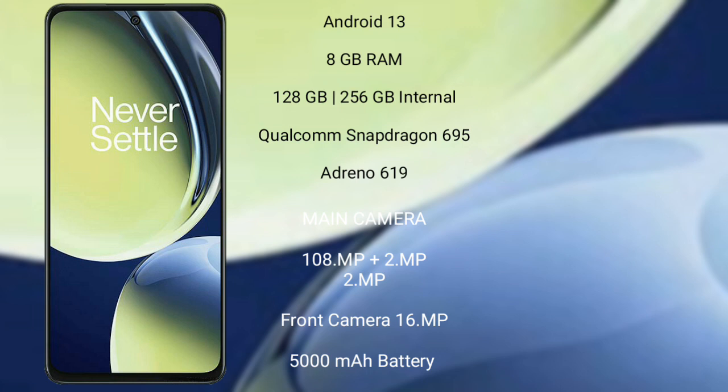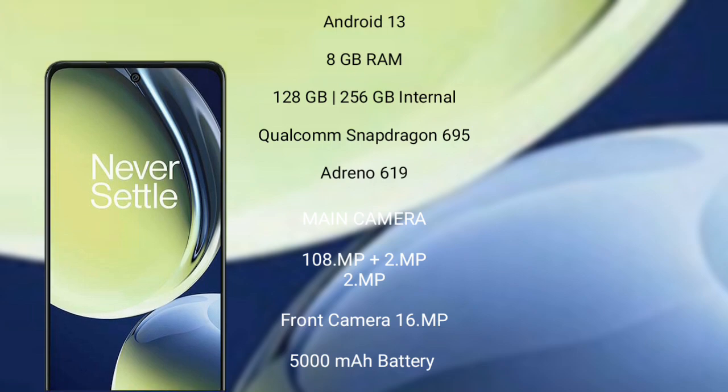The OnePlus Nord CE 3 Lite features a rear triple camera setup with 108MP plus 2MP plus 2MP, and a 16MP front camera. It is powered by a 5000mAh battery with 67W fast charging support.